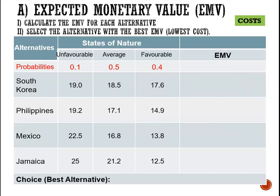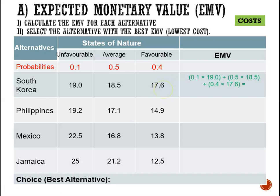We incorporate the probabilities into the table using decimals. So for probabilities, we have 10% for unfavorable, 50% for average, and 40% for favorable, as given. To calculate the EMV for South Korea, we take 0.1 × 19 + 0.5 × 18.5 + 0.4 × 17.6, and that gives us 18.9 million, which is the expected cost of doing the factory in South Korea.